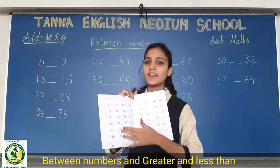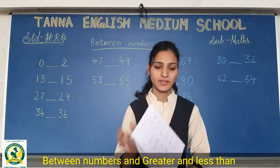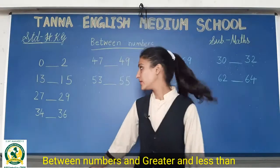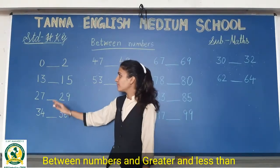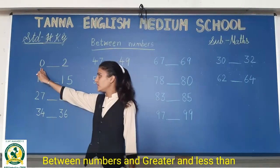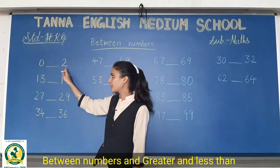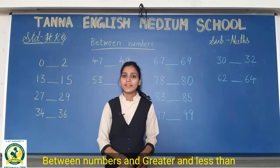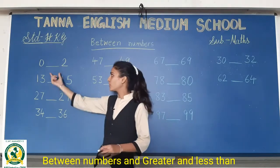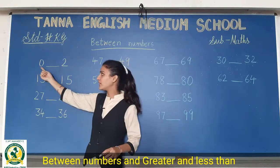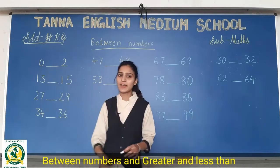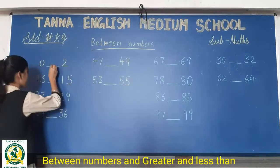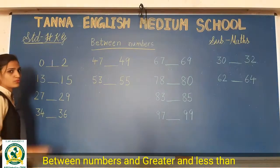We will do between numbers. So, aapko mere saath karna hai between numbers. See, 0, then blank, then 2. So, tell me what comes in between? After 0 kya aayega? 1. 0, 1, 2.